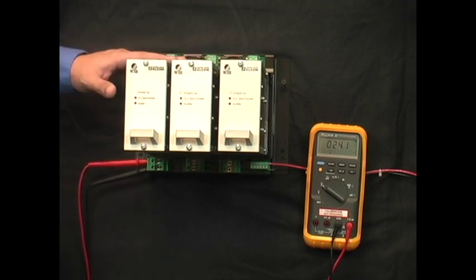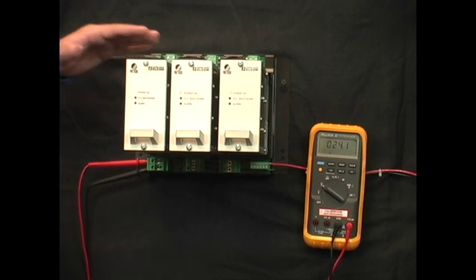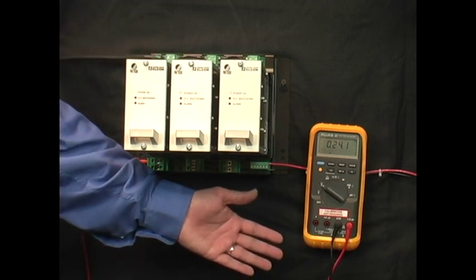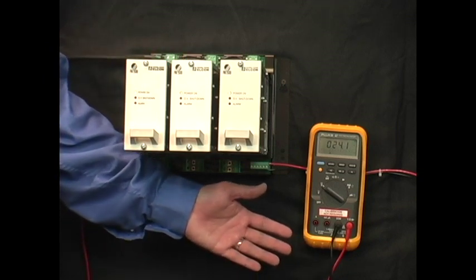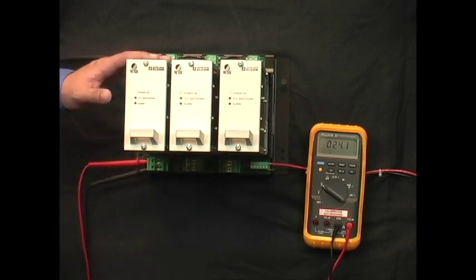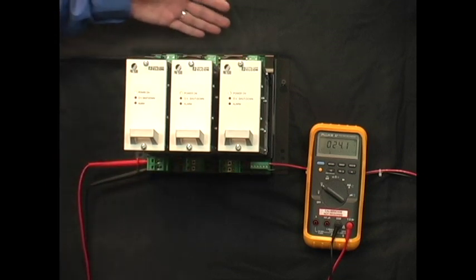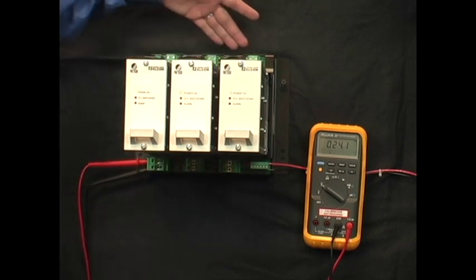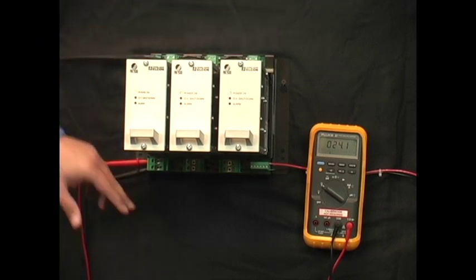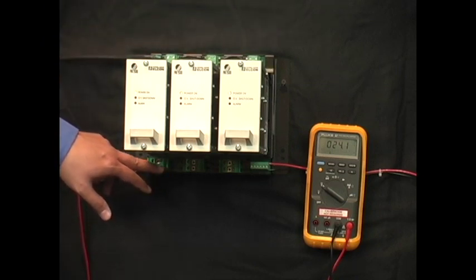Right now I have a 2 ohm resistive load connected for 24 volts. We have a meter over here showing the 24 volt output of these power supplies. These are backplane mounted. Here is the backplane, to the top is the AC terminal mains. Underneath is the DC output which I have my meter connected to.